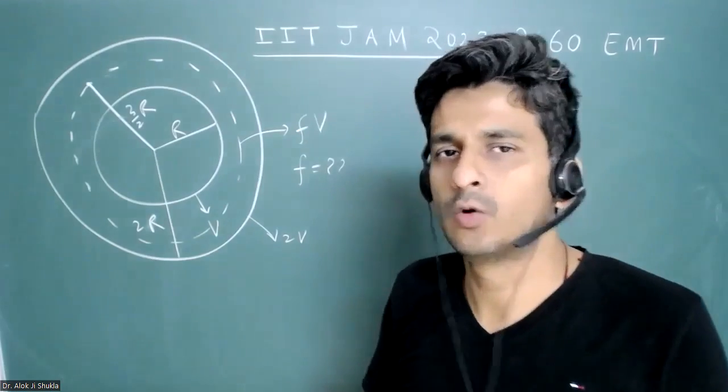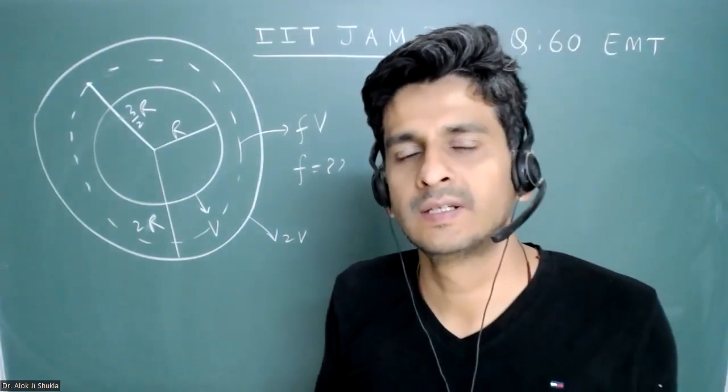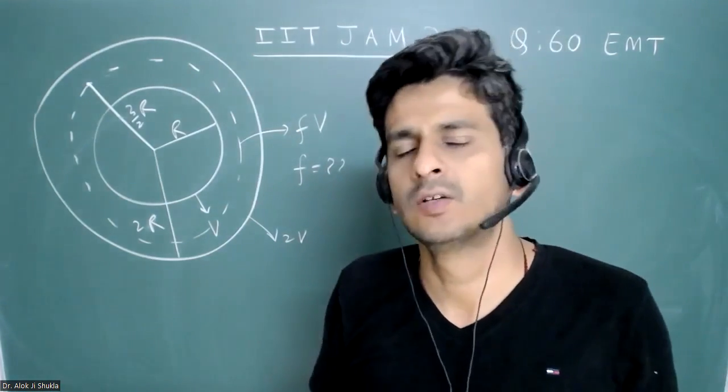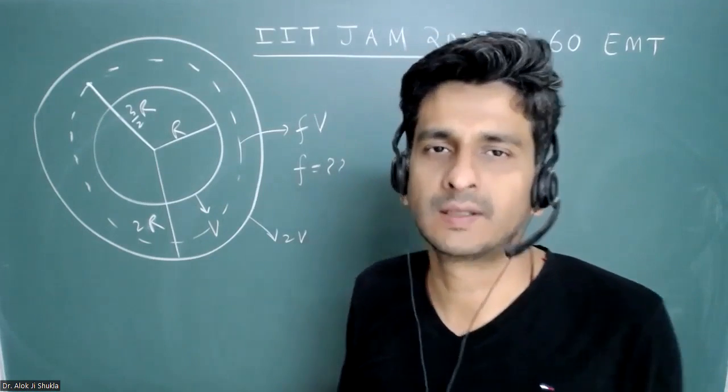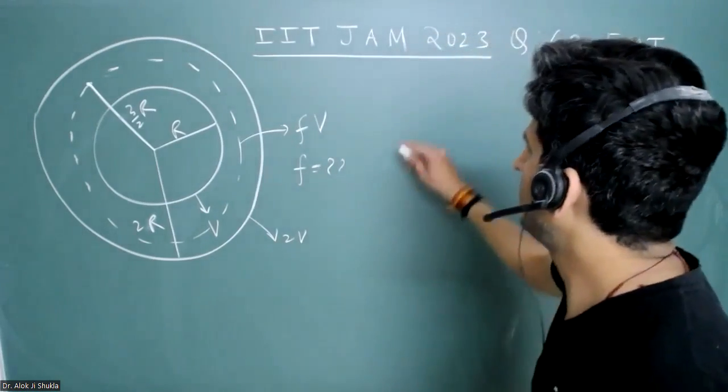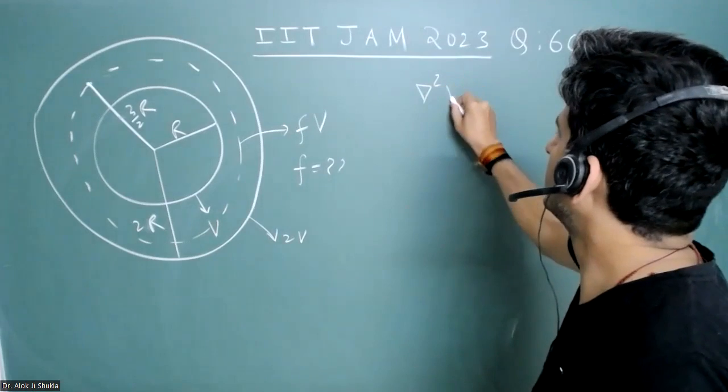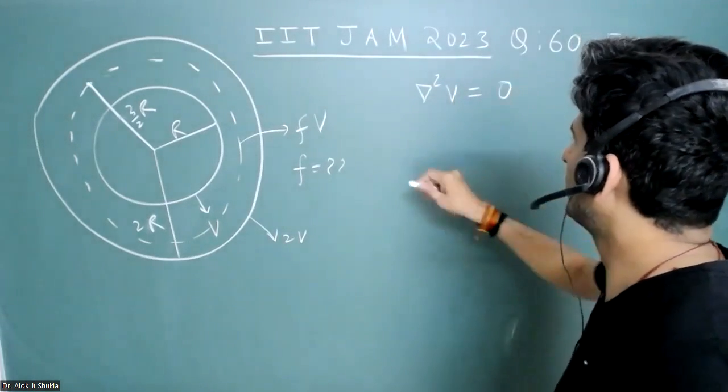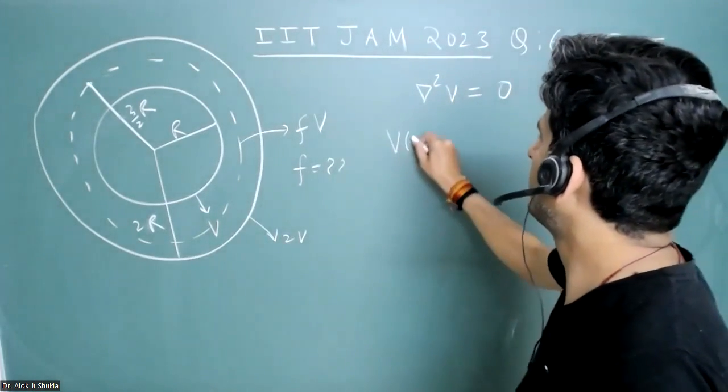Here no free charge is given, just the potentials are given, so obviously it is a case of Laplace equation. So if you write Laplace equation for this, del square v is equal to zero, you know the solution will be given by...